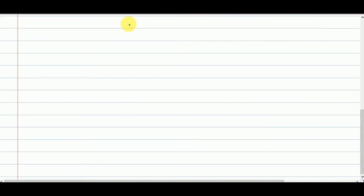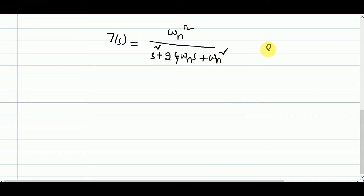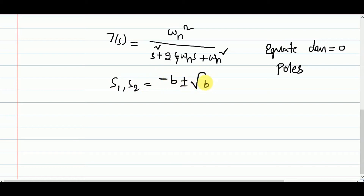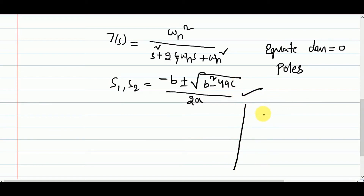Let me take the transfer function T(s) equal to omega_n squared divided by s squared plus 2*zeta*omega_n*s plus omega_n squared. If you equate the denominator to 0, the obtained roots are called poles. You can solve this using the quadratic formula: s1, s2 = (minus b plus or minus root of b-squared minus 4ac) divided by 2a. From the under-damped derivation, the roots are: minus zeta*omega_n plus or minus j*omega_n*root(1 minus zeta-squared).